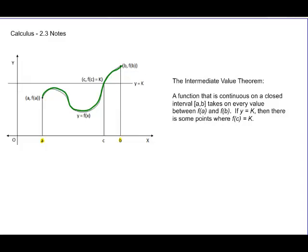So what the Intermediate Value Theorem says is that there's some random point that is going to be equal to K.